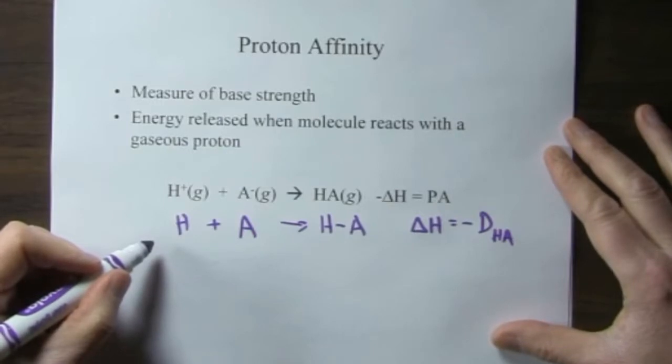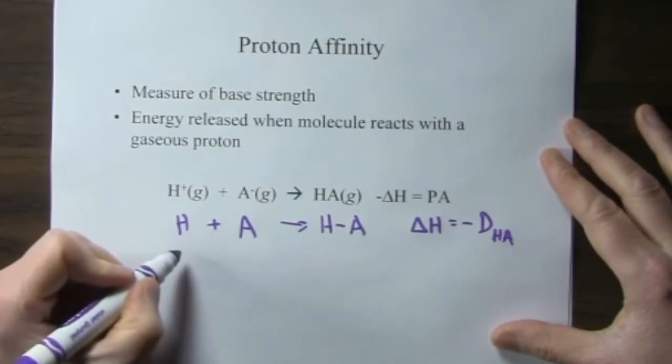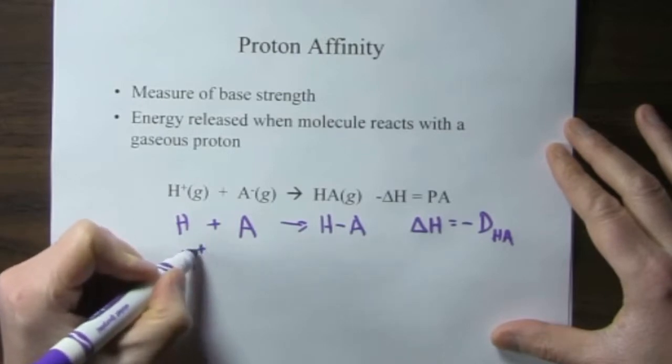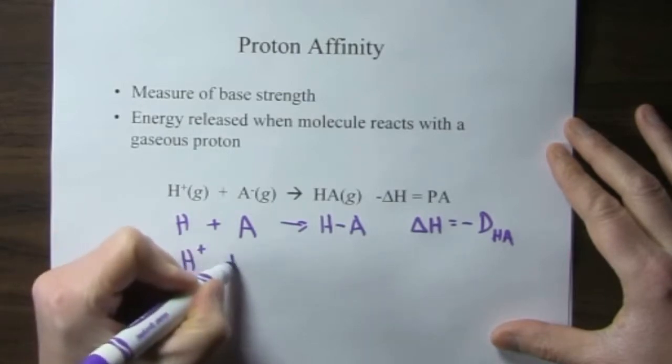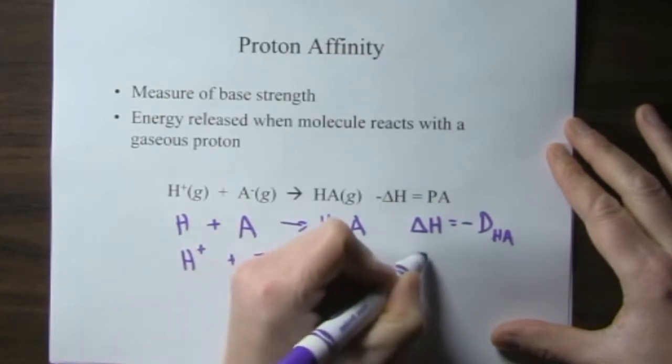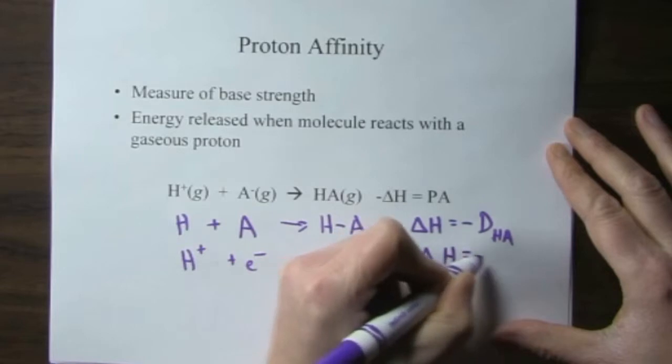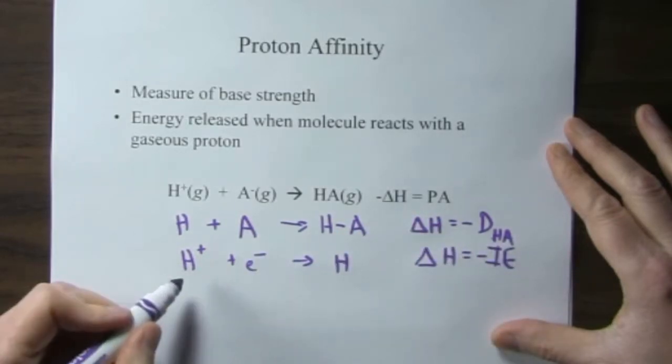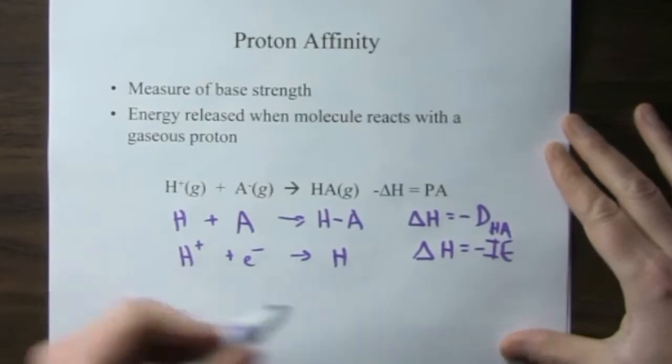And then, through Hess's law, we need to form the proton, the hydrogen ion. So that is due to the negative ionization energy of the hydrogen.